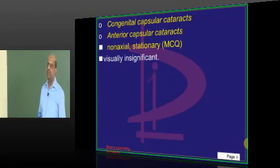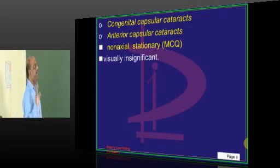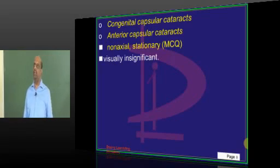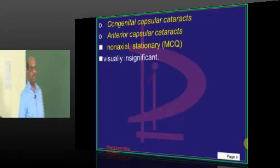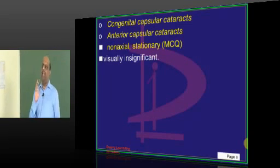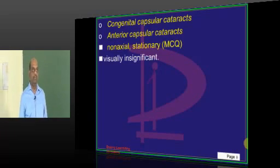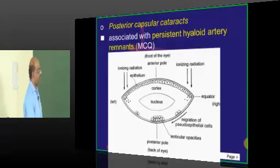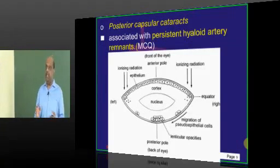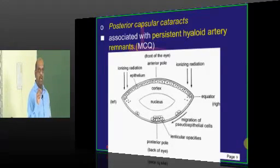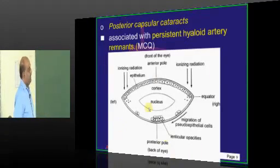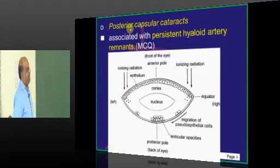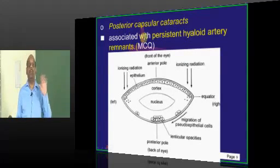Starting with congenital capsular cataracts: anterior capsular and posterior capsular. The two important MCQ points about anterior capsular cataract are that it is non-axial, stationary, and visually insignificant. Posterior capsular cataract is important because of its association with persistent hyaloid artery remnants — remember it is capsular, not subcapsular.